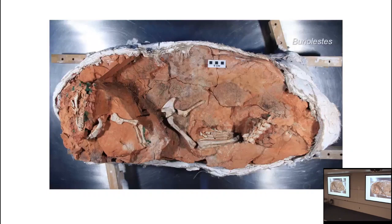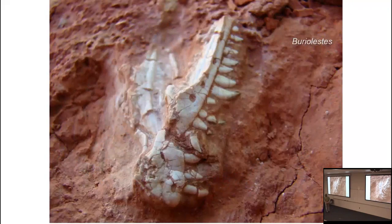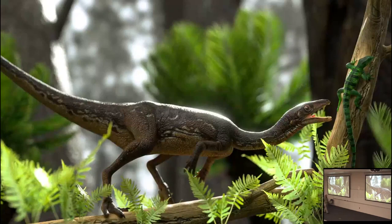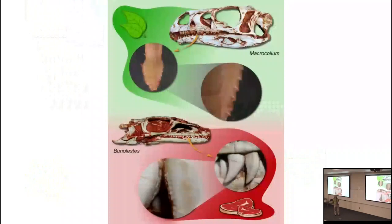In the last five years or so, Buriolestes has shown up. Post-cranially, and even in some skull bones, it is indeed a sauropodomorph. But what's intriguing about it are its teeth — its teeth are most definitely those of a carnivore. It probably was omnivorous, as many animals with general carnivorous dentition also feed on plants, but it's still eating flesh. This is probably ecologically the closest thing we have to the first sauropodomorph.